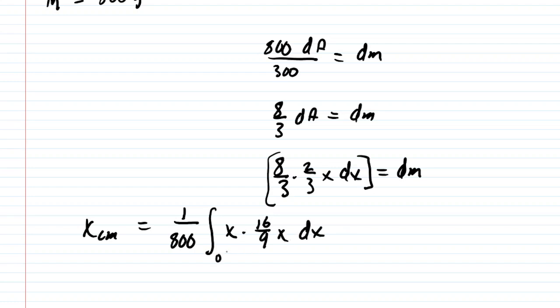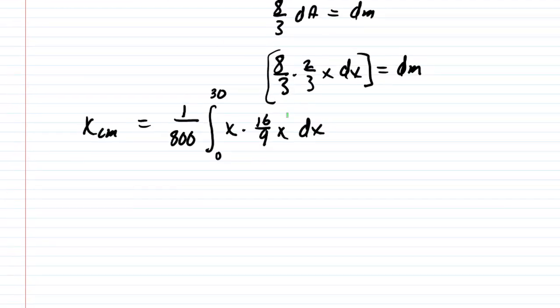And then as stated earlier we will be integrating from zero to 30. So now we're getting somewhere we can actually simplify our integral by factoring out this 16 ninths. So you're going to want to multiply 16 ninths by 1 over 800. And when you do that you should get 1 over 450. So we're going to rewrite the integral now as 1 over 450 times the integral from 0 to 30. And then what's left on the right side of the integral is x times x. You can see it right there. That's going to create x squared. And there is our integral.